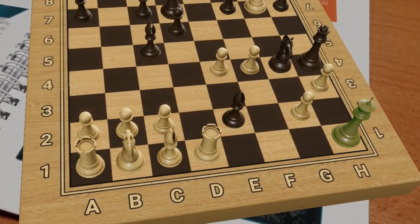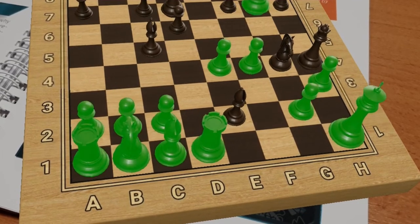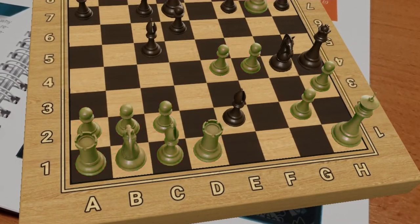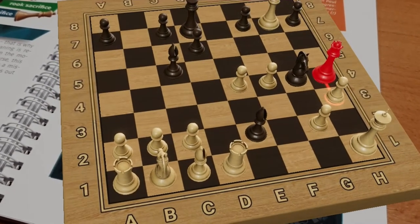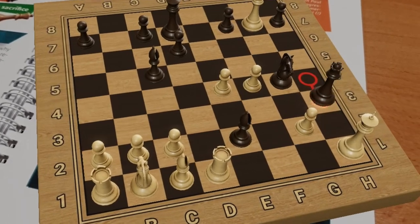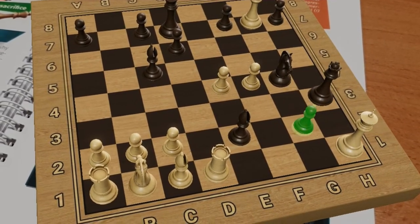White's considerable material advantage is in vain, as chess is played for giving checkmate. Black plays queen takes h3, and sacrifices its queen, which White has to accept.